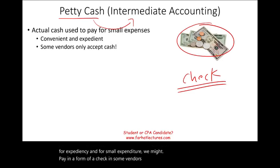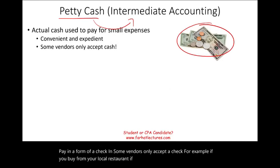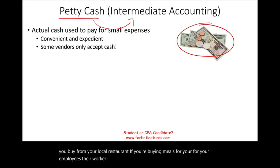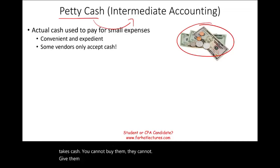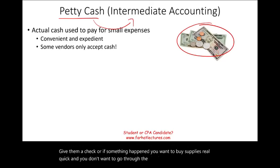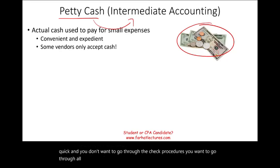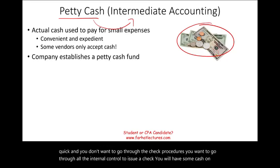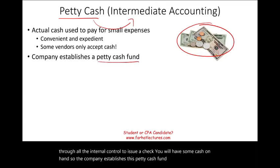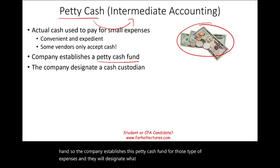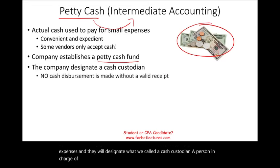For example, if you buy meals from your local restaurant for employees working overtime during lunch, the restaurant may only take cash — you cannot give them a check. Or if something comes up and you need to buy supplies quickly, you don't want to go through all the internal control procedures to issue a check. So the company establishes a petty cash fund for those types of expenses, and they designate what we call a cash custodian — a person who is in charge of that cash.